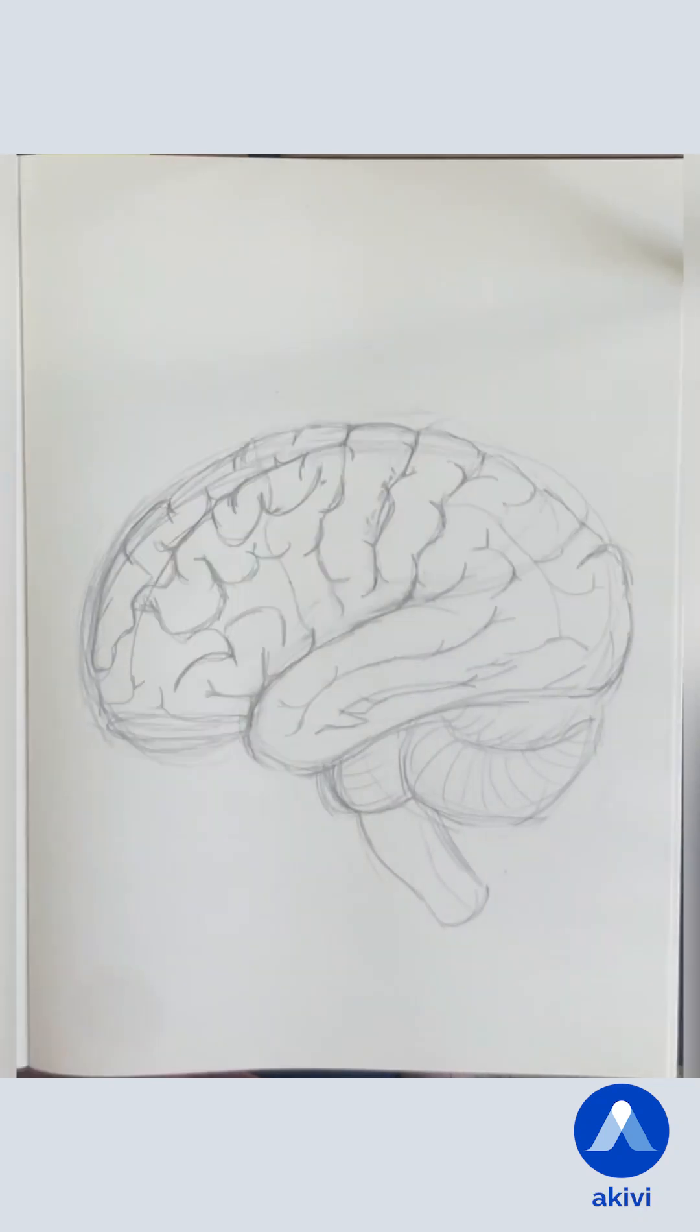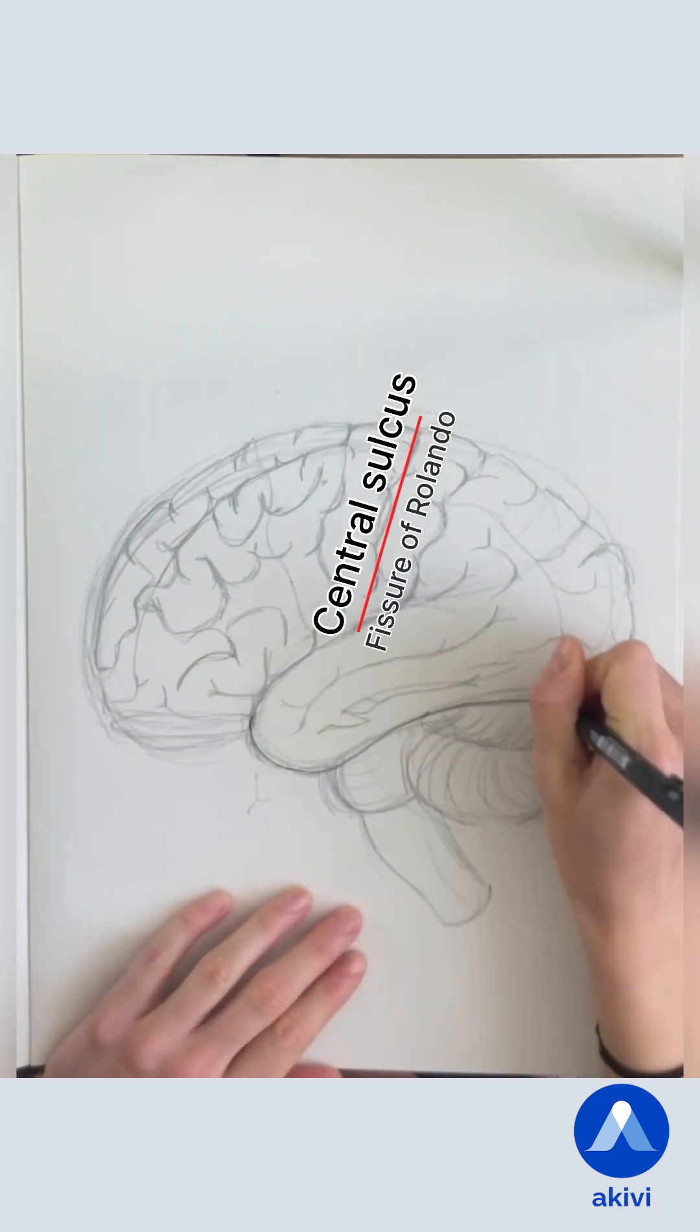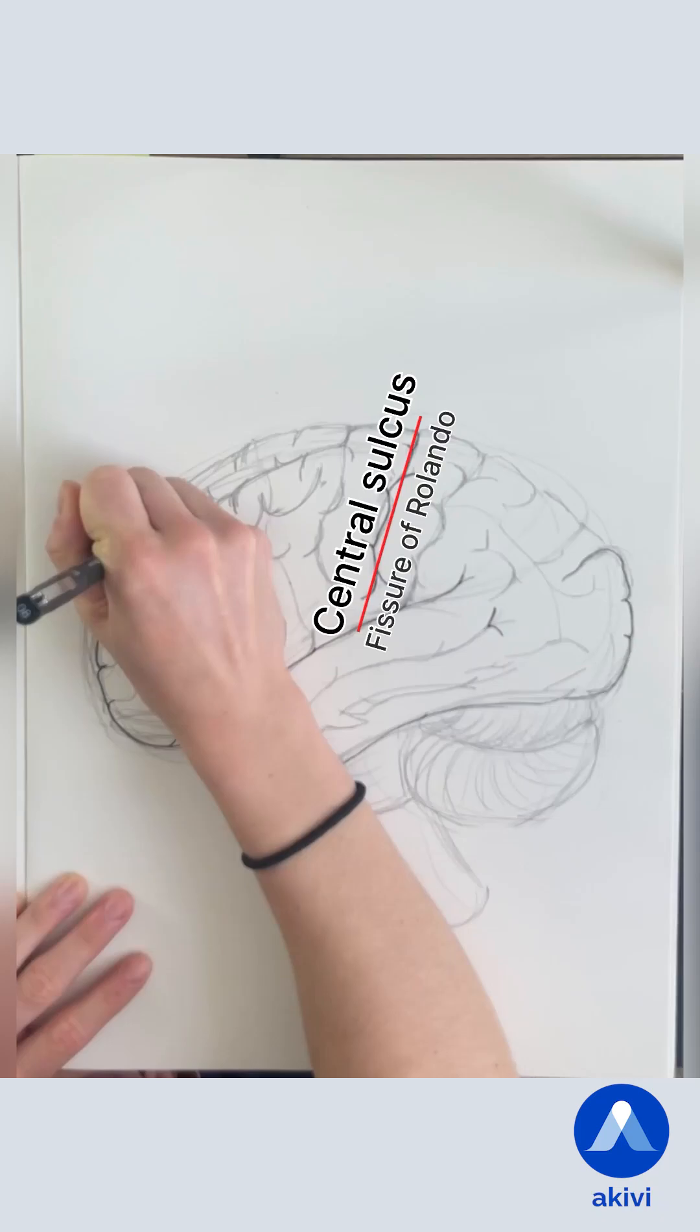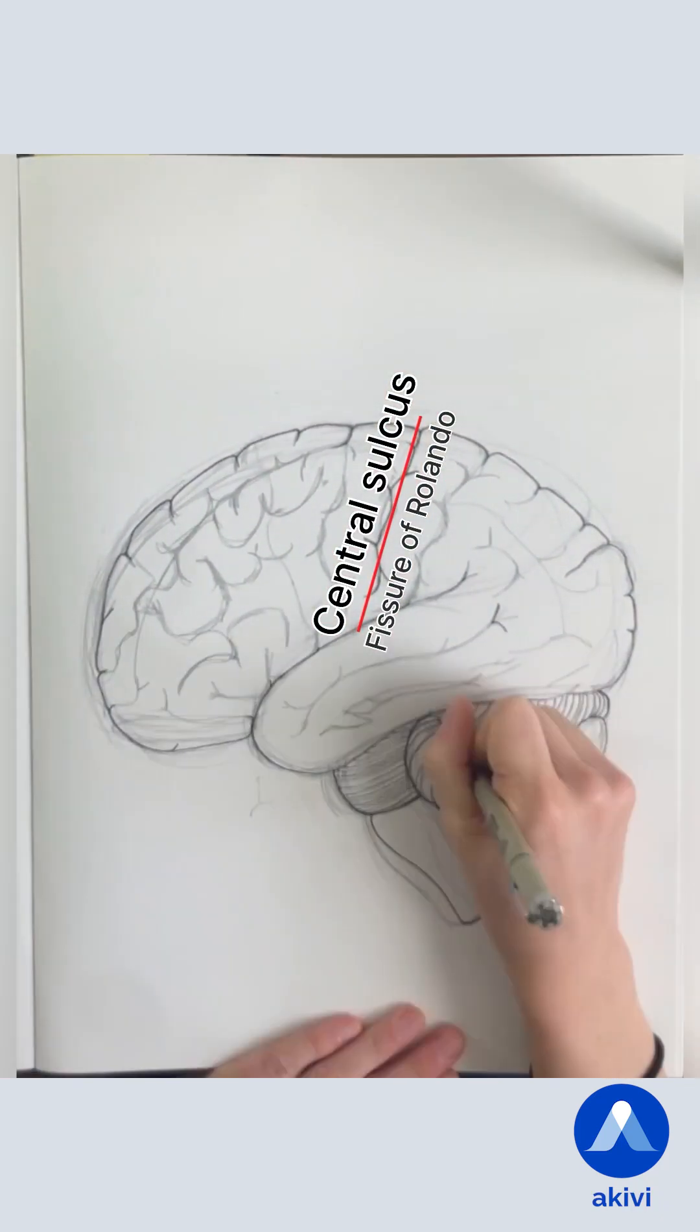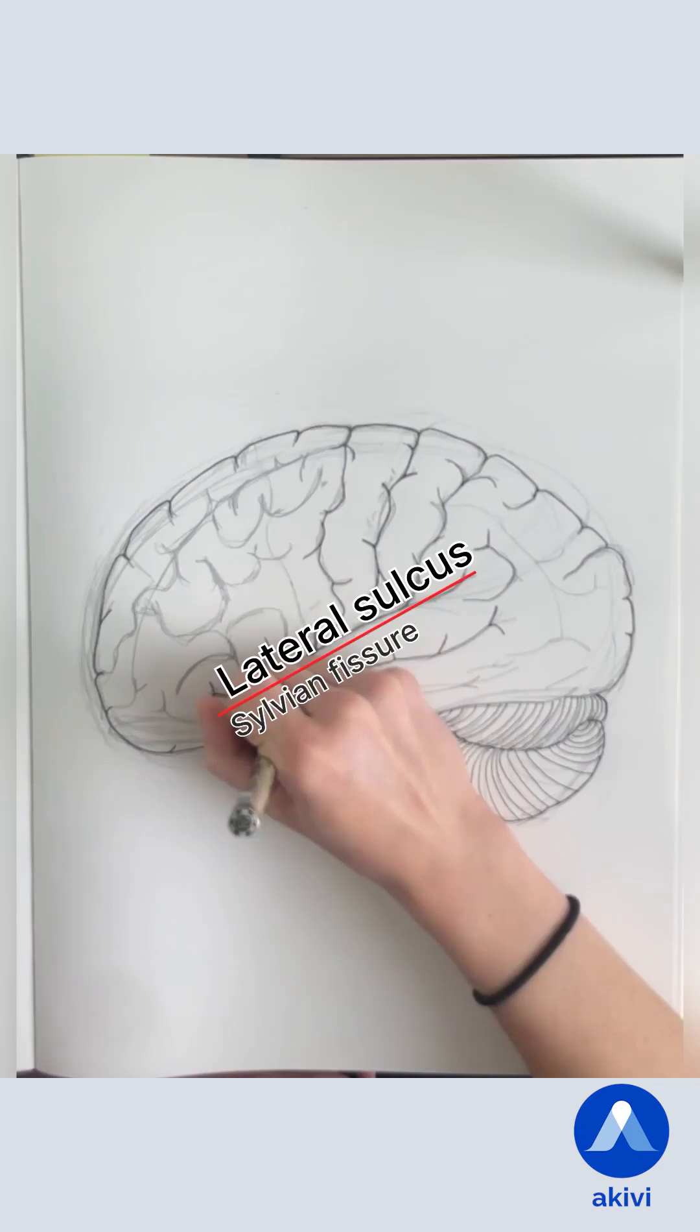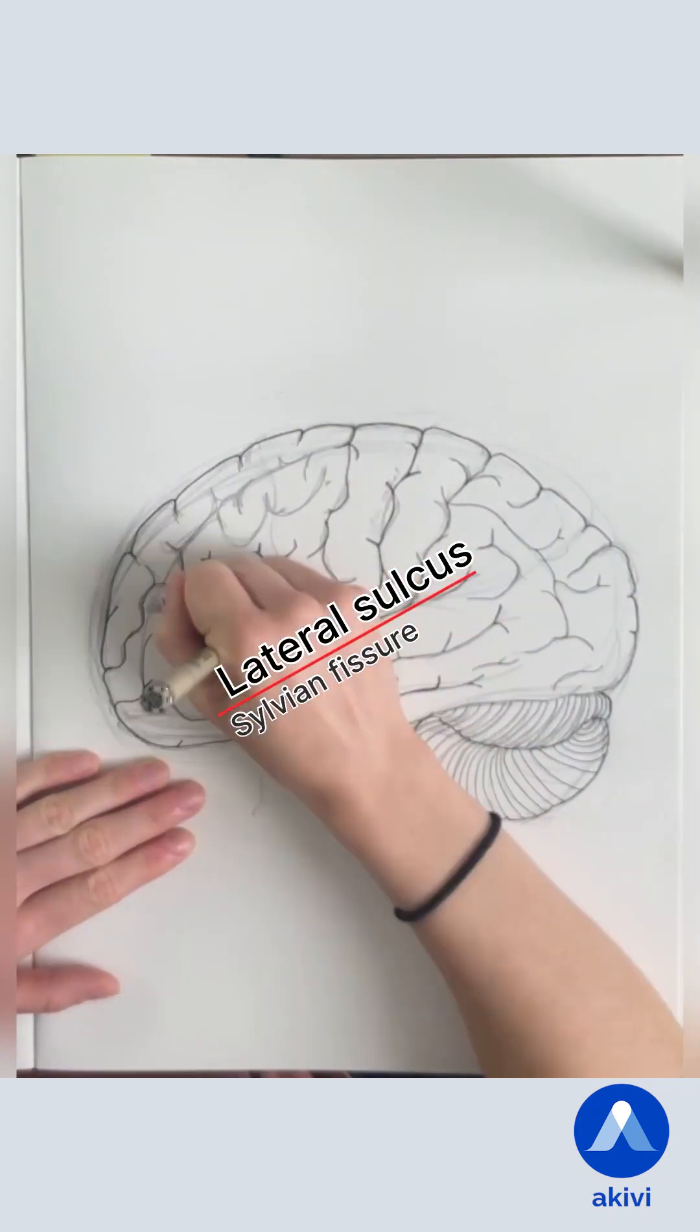Here, I represented two of the primary sulci, the central sulcus, or fissure of Rolando, separating the frontal from the parietal lobe, as well as the motor from the sensory cortices, and the lateral sulcus, or Sylvian fissure, separating the frontal from the temporal lobe.